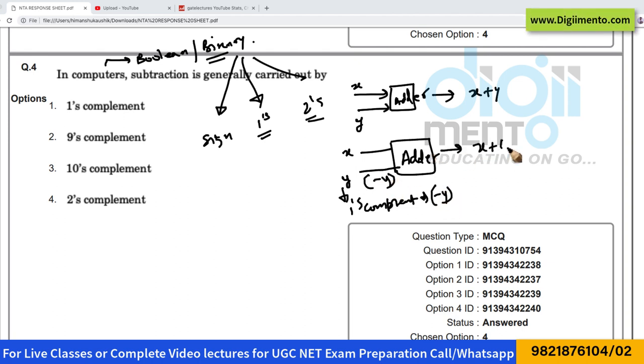So the result will be x plus minus y. And the third way is that to this adder, you give 2's complement. So for example, if you want to do x minus y, you give x and you can give 2's complement of y, and it will do x plus minus y.